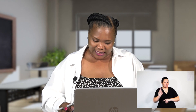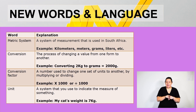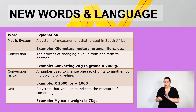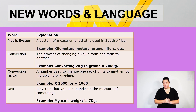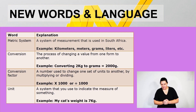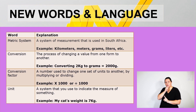I hope you are still with me and enjoying — please do calculations out there also. The metric system refers to a system of measurement used in South Africa. It involves units like kilometers, meters, grams, liters, and so on. Conversion is the process of changing a value from one form to another — for example, converting 2 kg to grams gives 2,000 grams. A conversion factor refers to a number used to change one set of units to another by multiplying or dividing — for example, multiplying or dividing by a factor of one thousand.